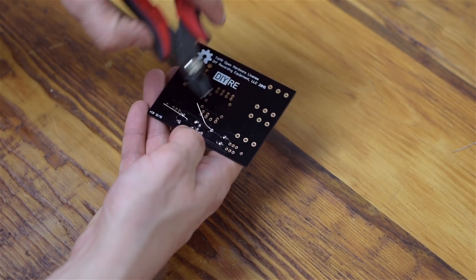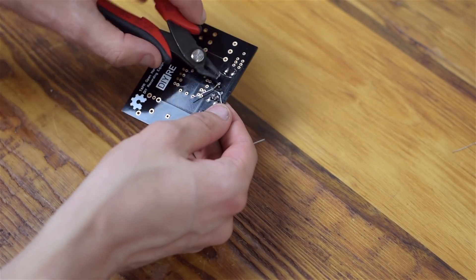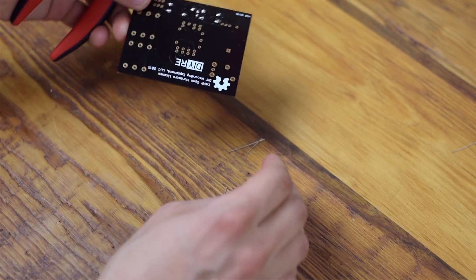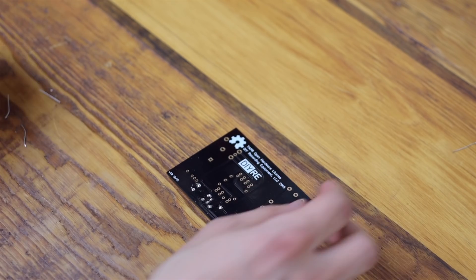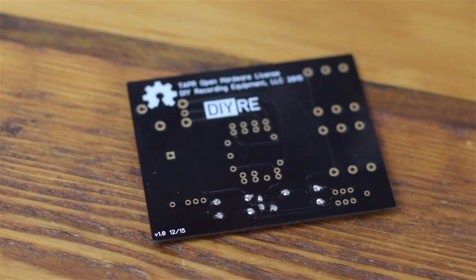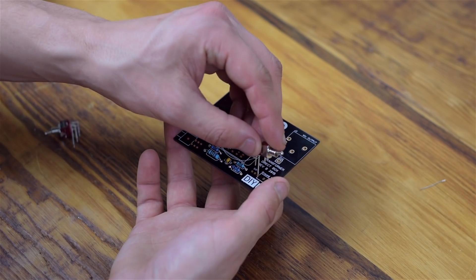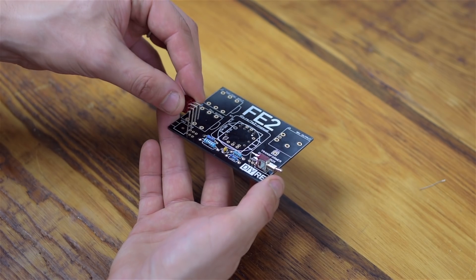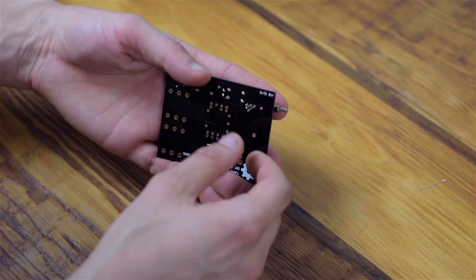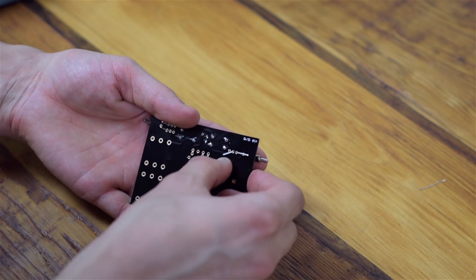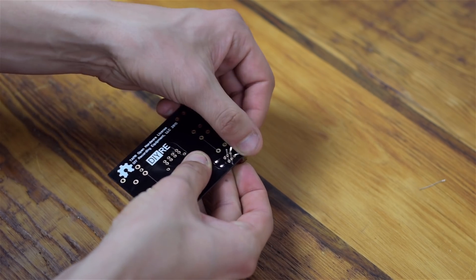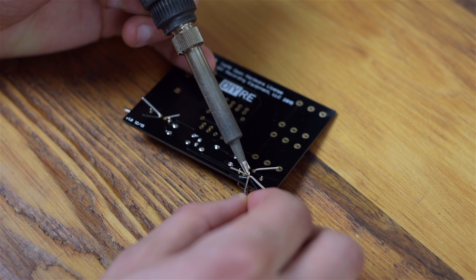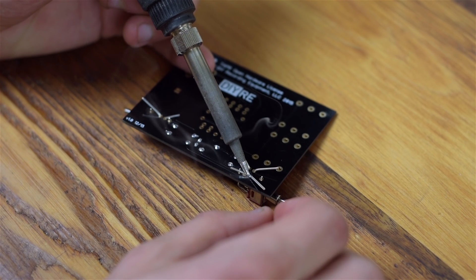Once the joints have cooled, use your wire cutters to clip the excess leads. Clip as close as you can to the joint without clipping the joint itself. Now place the two switches in the positions marked SW1 and SW2. Bend their leads against the bottom of the PCB to hold them in place. Then solder all of the leads and clip them just as you did with the resistors.